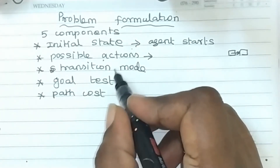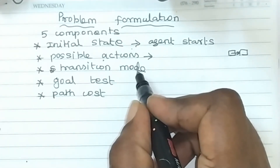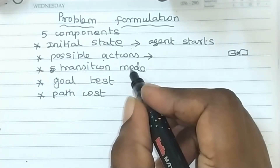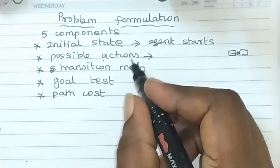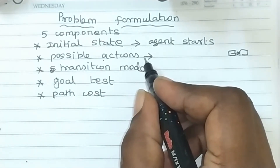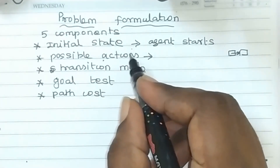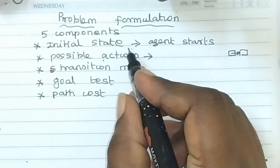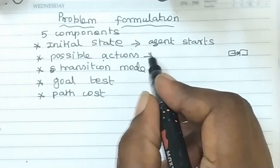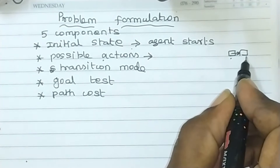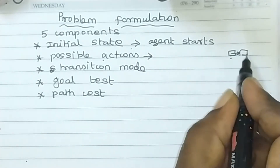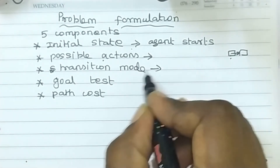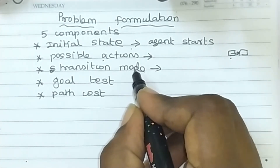The third component is the transition model. The transition model describes what action the agent is going to perform. The agent moves from one state to another state, and that movement to another state is the transition model.